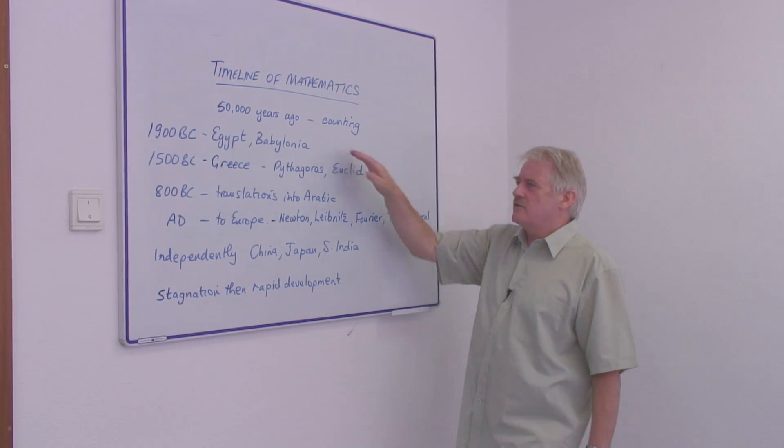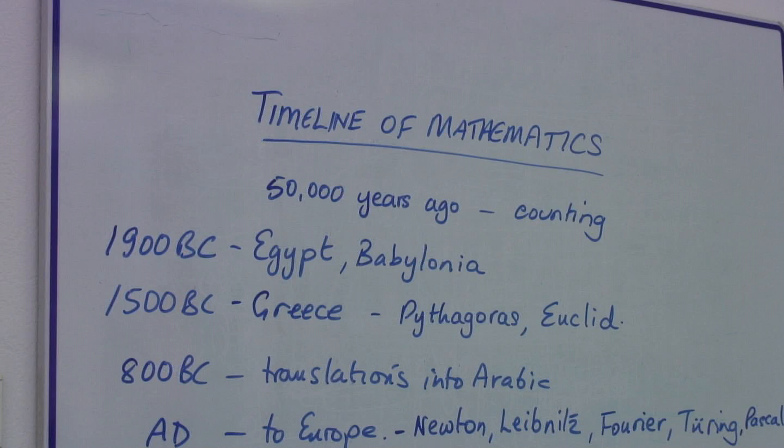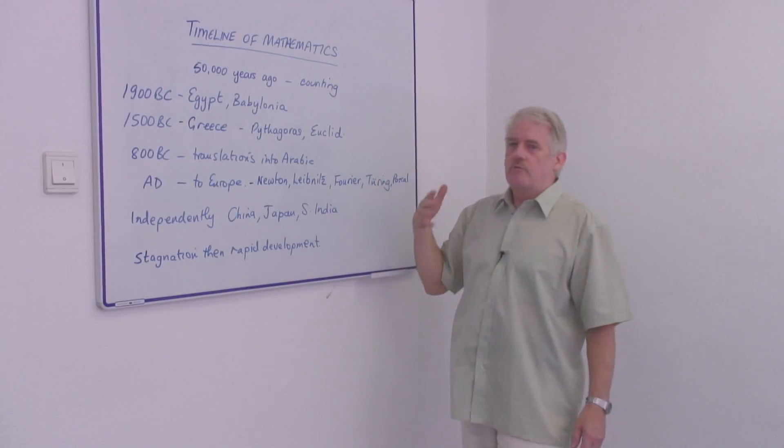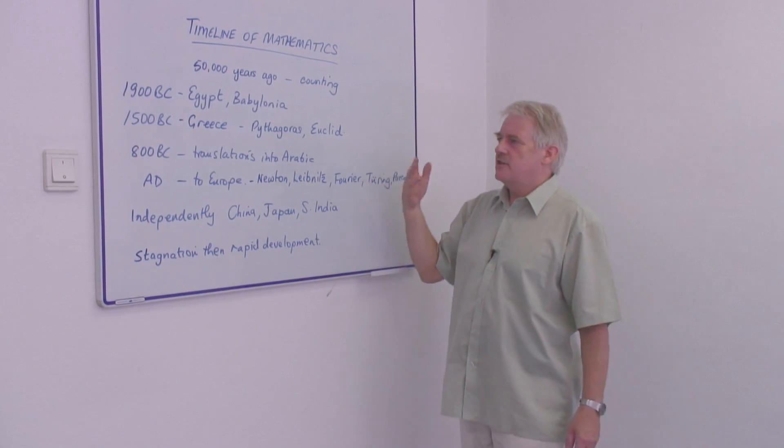But not really until we see the Egyptians and the Babylonians around 4,000 years ago, 1900 BC, do we get real mathematics where we're actually developing theorems.